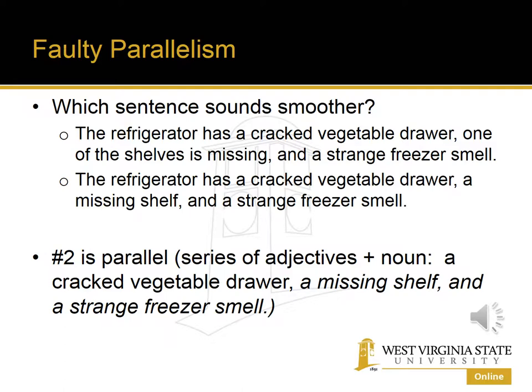The second sentence is parallel. It has a series of adjective-noun phrases: a cracked vegetable drawer, a missing shelf, a strange freezer smell — each following 'has.' The first sentence fails because 'one of the shelves is missing' doesn't work with 'has.' You can't say 'the refrigerator has one of the shelves is missing.' The second sentence correctly uses 'has drawer, has shelf, has strange smell.'